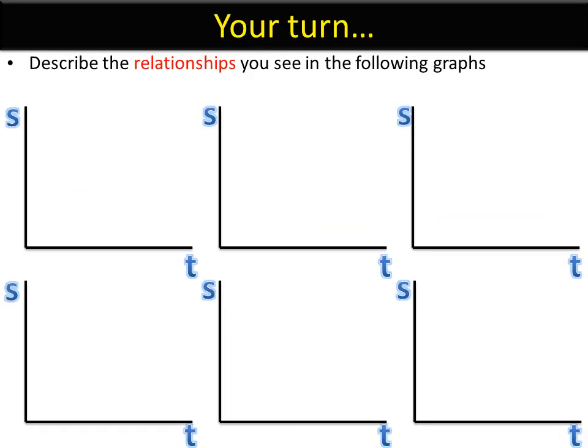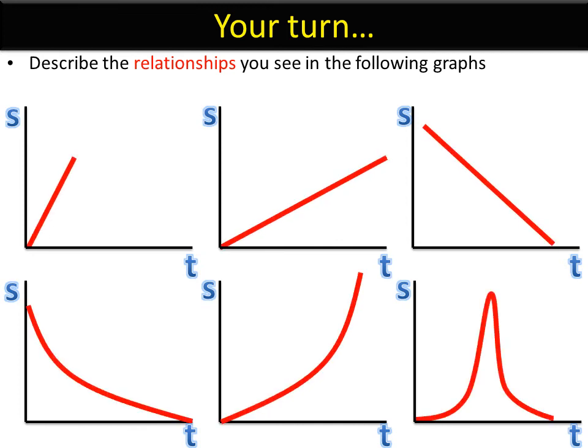Here's your turn. See what you can make of these graphs. They're all speed-time graphs, so it might be worth pausing the video once you see the graphs so you can take some time to write down your answers and then compare them. So these are the graphs A, B, C, D, E, and F. How would you describe them? If you want to, pause the video now.